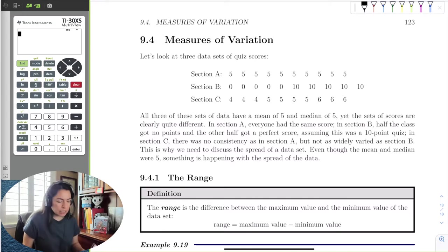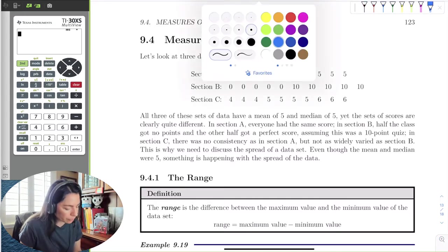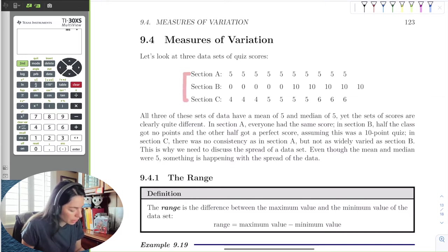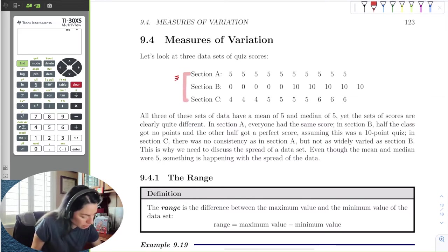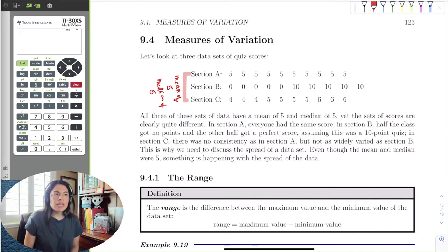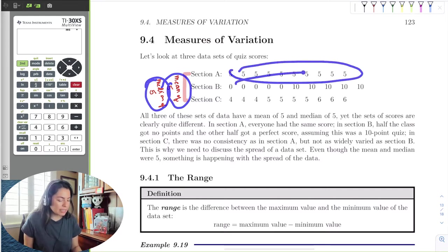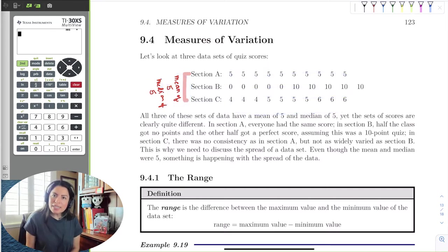If we observe closely, we would see that each of these sections have a mean of 5 and a median of 5. But you're saying they all have the same average and the same median, but their data sets look so different. And I would say, yeah. So just because you have the same mean and median, it doesn't mean your data is the same. Our data is different. So if the mean and median are the same, it's wise to maybe talk about the spread of the data.